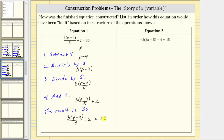Let's look at our second equation. Here we have negative three times the quantity two a plus five minus four equals 15. We start with the variable, which is a. Inside the parentheses, because we have two a, step one is multiply by two. If we multiply, a times two is equal to two a. Looking inside the parentheses, we have two a plus five, which means the next step is add five to this product. So step two, add five. If we add five to this product, we have the expression two a plus five.